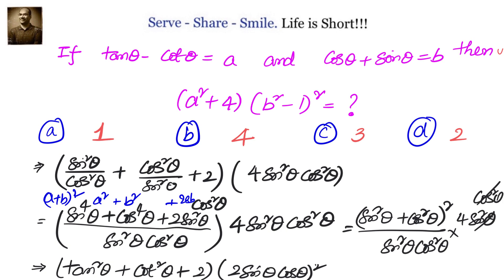Now we can see that sin²θ·cos²θ will cancel. This whole thing becomes 1, and sin²θ + cos²θ = 1. So what is left is 4. The answer is 4.